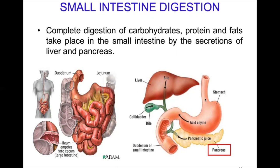At the juncture of the esophagus and the stomach, and between the stomach and the small intestine, there are sphincter muscles that act as valves. Once food enters the stomach, the sphincter prevents backflow into the esophagus. The sphincter between the stomach and small intestine contracts to keep food in the stomach during digestion, which takes nearly three to six hours. Churning takes place in the stomach aided by peristaltic movement, and the digested food then enters the small intestine.